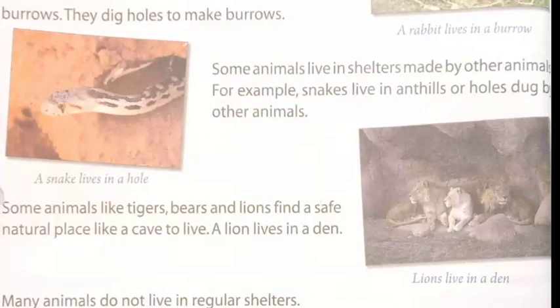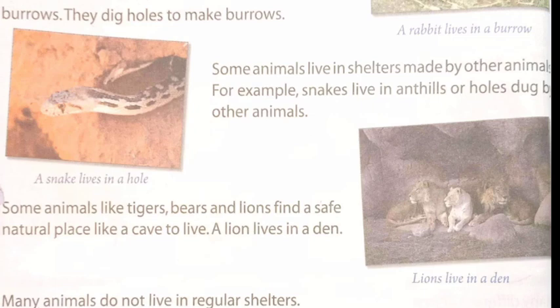Some animals live in shelters made by other animals — for example, snakes live in anthills or holes dug by other animals. Some animals like tigers, bears and lions find a safe natural place like a cave to live. A lion lives in a den.